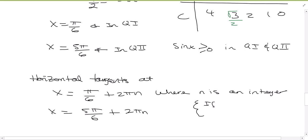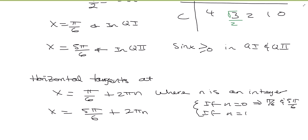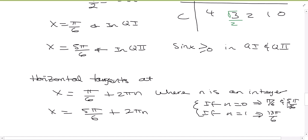Notice that if n = 0, you get just pi/6 and 5pi/6. If n = 1, you go one revolution over — so pi/6 + 2pi: since 2pi = 12pi/6, that gives 13pi/6. And 5pi/6 + 12pi/6 = 17pi/6. If n = −1, you're going the other direction, subtracting 2pi and so on. So this gets you all of them — if n is 2, 3, 4, you just keep going around the circle.